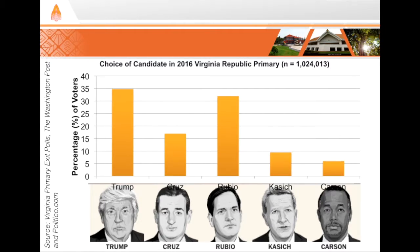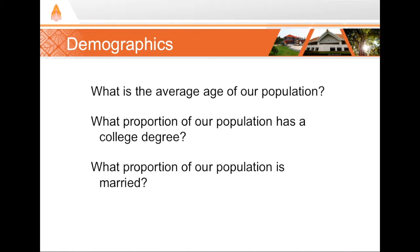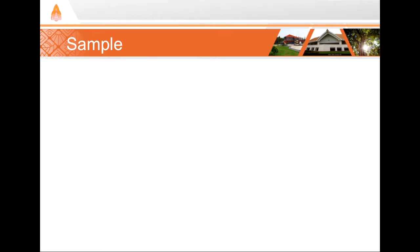Let's say we want to know more about the demographics of the population, such as their age, sex, education level, marital status, and so on. We could ask every single person in the population — all one million-plus — but that would be impossible, or at least very expensive or time-consuming. Instead, we take a sample of the population. A sample is a subset of the population. If it is done without bias and randomly, we can usually create a sample that has the same demographic makeup as the population.